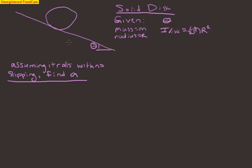Let's talk about rolling, since we didn't talk about rolling much in class. Let's say that we have a solid disk that we want to roll down the incline. We're given the angle of the incline, the mass of the disk is m, and the radius of the disk is r. For a solid disk, the moment of inertia is one-half m r squared.